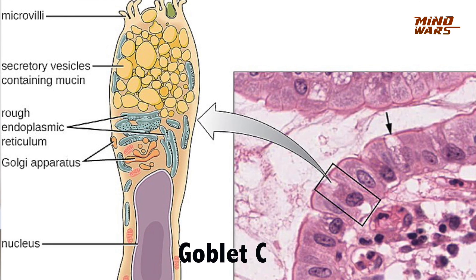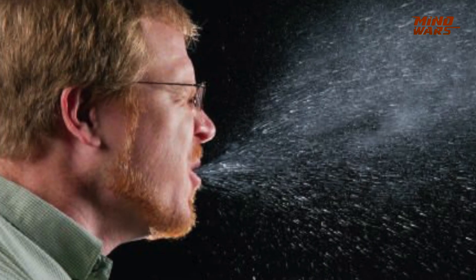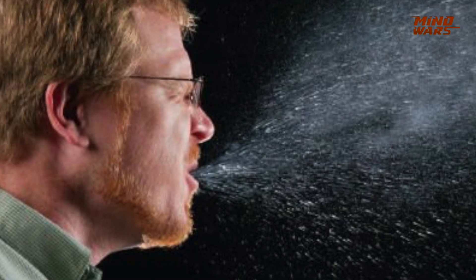Another part of the first line of defense is our respiratory tract — the goblet cells. These are specialized cells which release mucus. This mucus in the respiratory tract traps dust particles and microorganisms. When we sneeze, the microorganisms and dust particles trapped in mucus come out, helping to release pathogens out of the body. This completes the first line of defense.